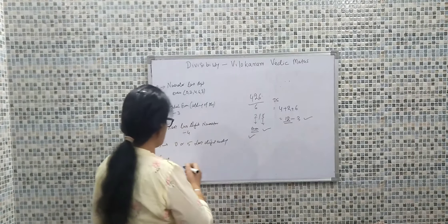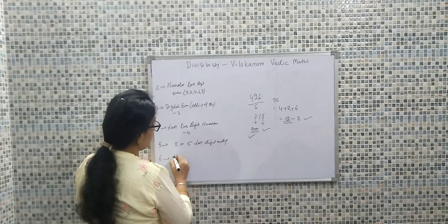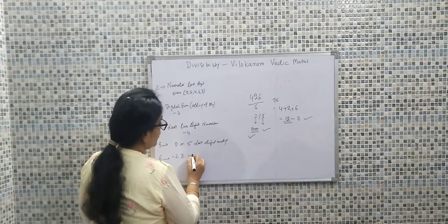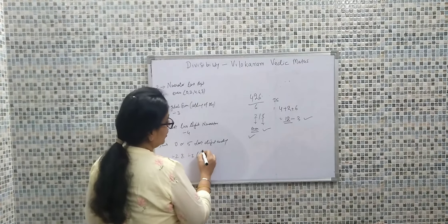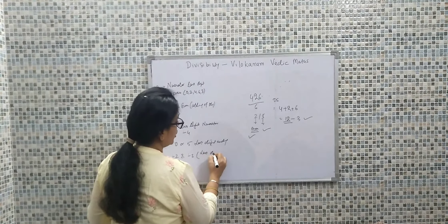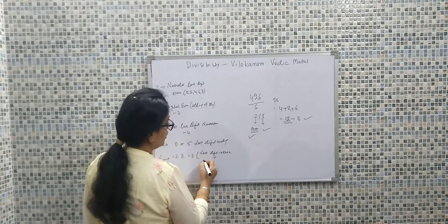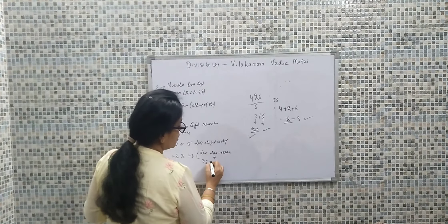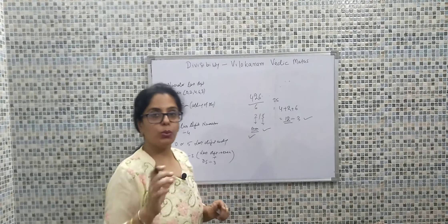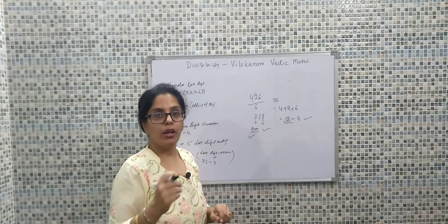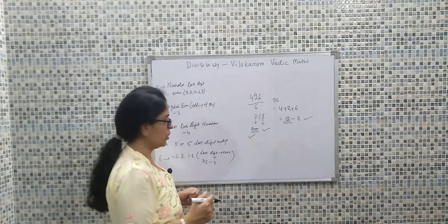Suppose I make it 426. The last digit 6 is even, so it satisfies divisibility by two. Digital sum: four plus two plus six is twelve. Twelve is divisible by three. So it satisfies both conditions — divisible by two and divisible by three — hence 426 is divisible by six. The rule for six: the last digit must be even (divisibility by 2 condition) and the digital sum must be divisible by three (divisibility by 3 condition). Both conditions must be fulfilled.